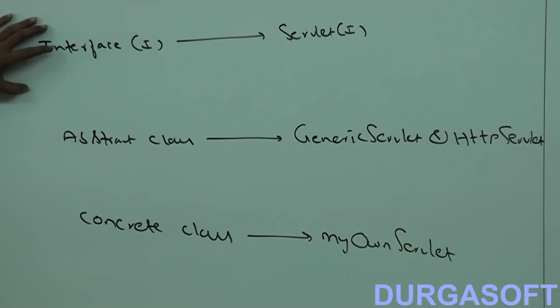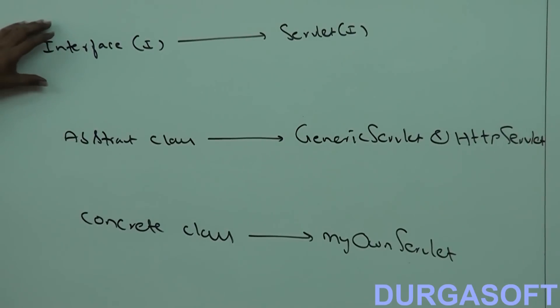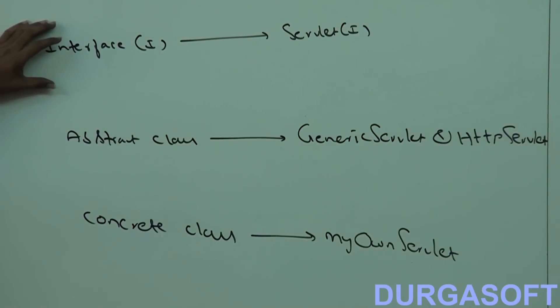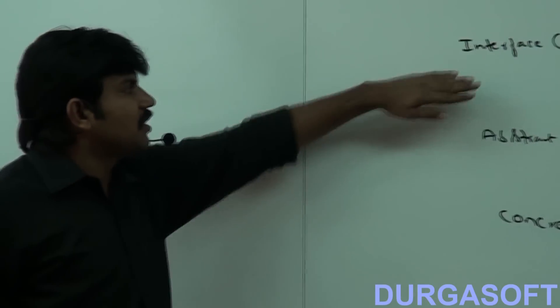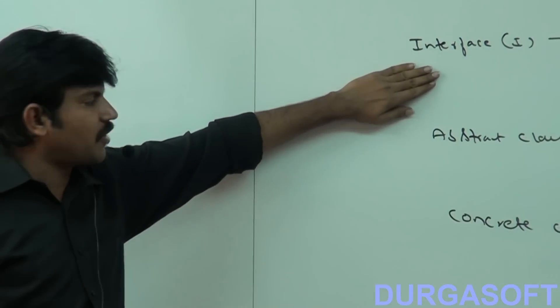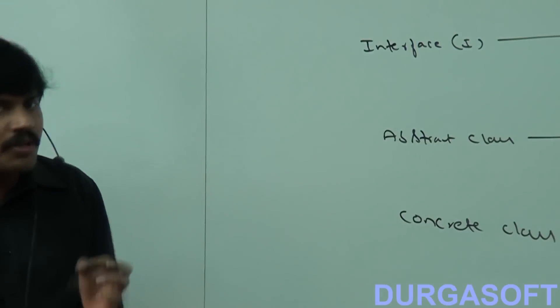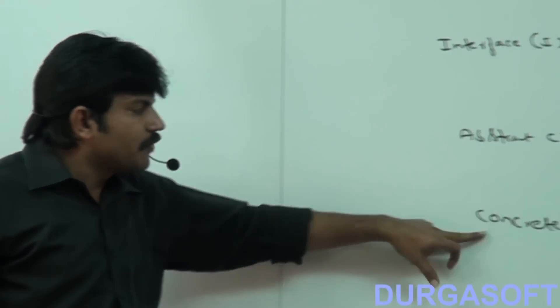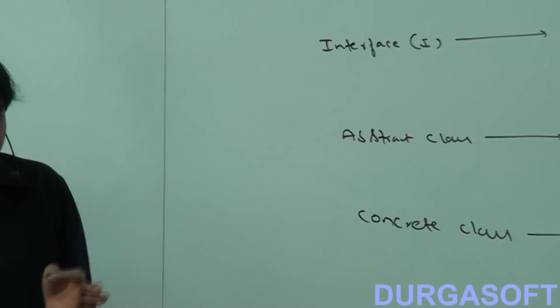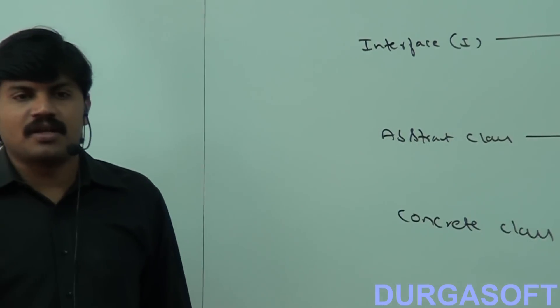So to summarize: when we should go for interface — if we don't know anything about implementation, just a requirement specification, then we should go for the interface concept. When we should go for abstract class — we are talking about implementation but not completely, partial implementation, then we should go for abstract class. If we are talking about implementation completely and ready to provide service, then we should go for a concrete class.